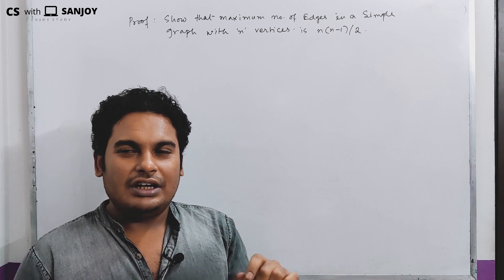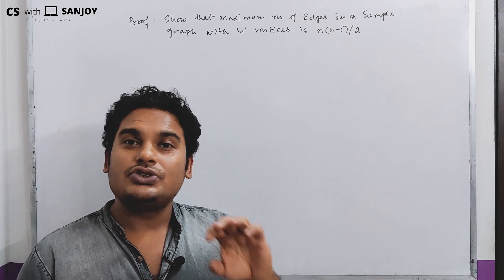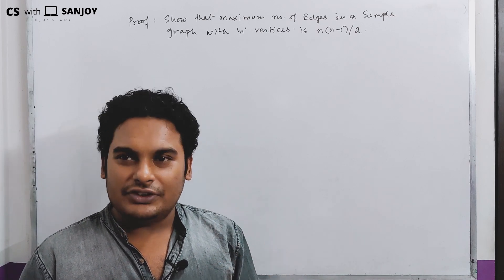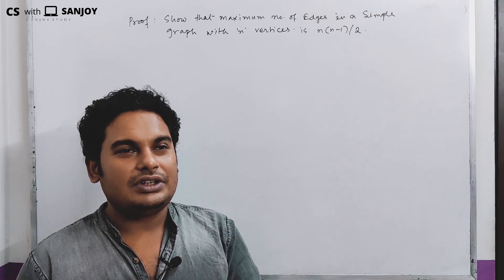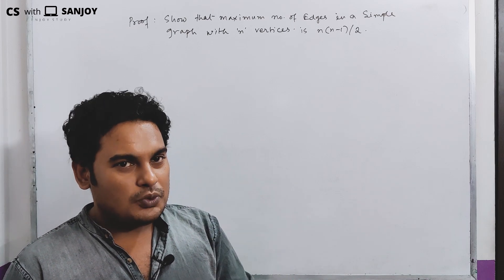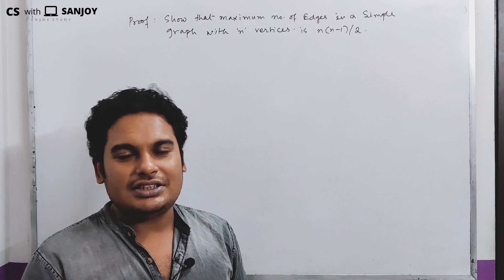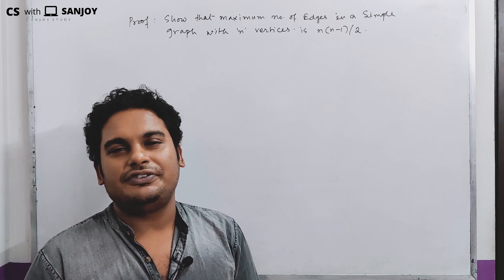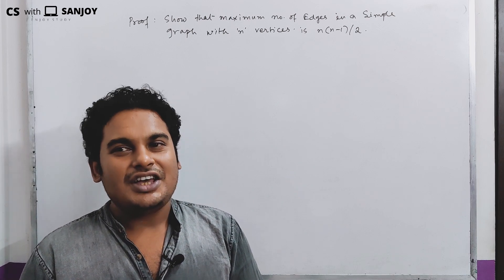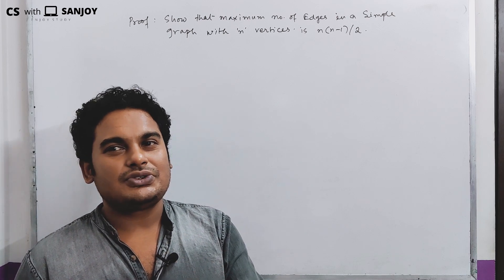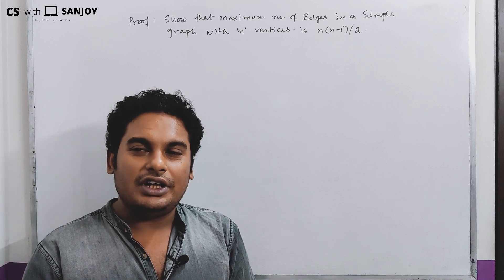We have already seen the complete graph definition. If you have not seen these definitions in graph theory, you can click on the i button and see those definitions. The complete graph idea will be clear from those.